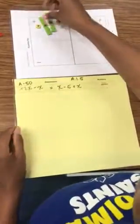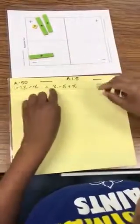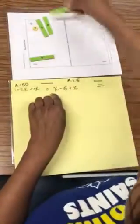So the first one is 1 plus 2x, so there's my 2x, subtract x, you can put that down here, equals x. So there's my x and there's minus 5.